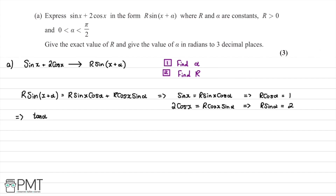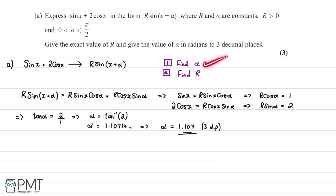We know that tan alpha equals r sin alpha over r cos alpha, which gives us 2 over 1. Therefore, alpha equals arctan of 2. Putting that into our calculator in radians mode gives 1.10714..., so to three decimal places, alpha is equal to 1.107 radians. That's step one complete.